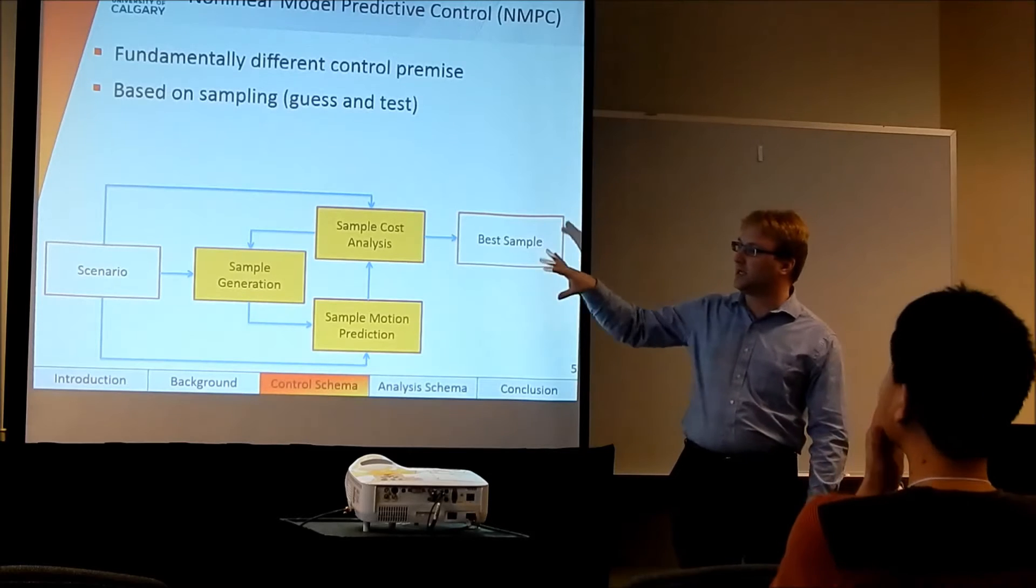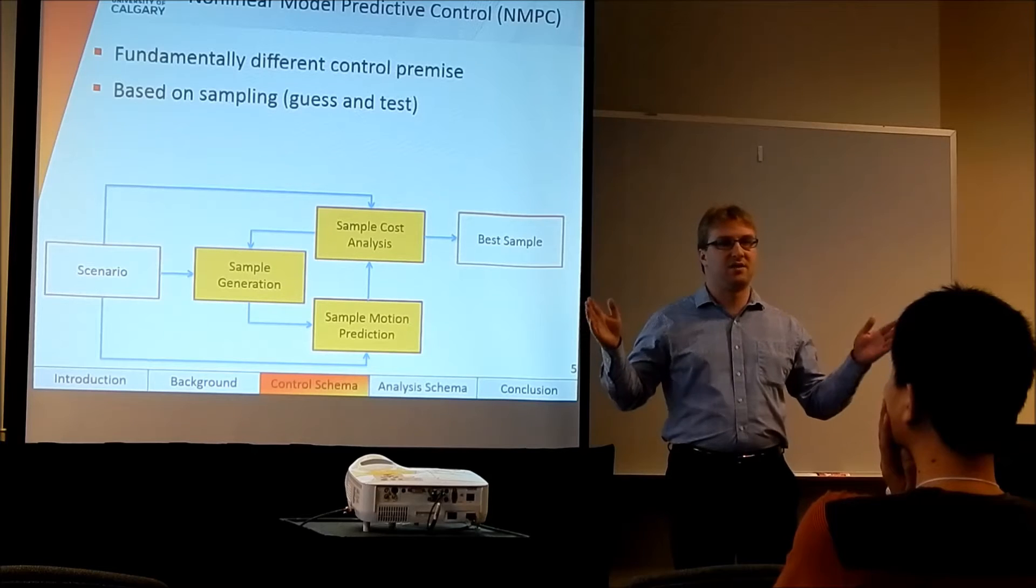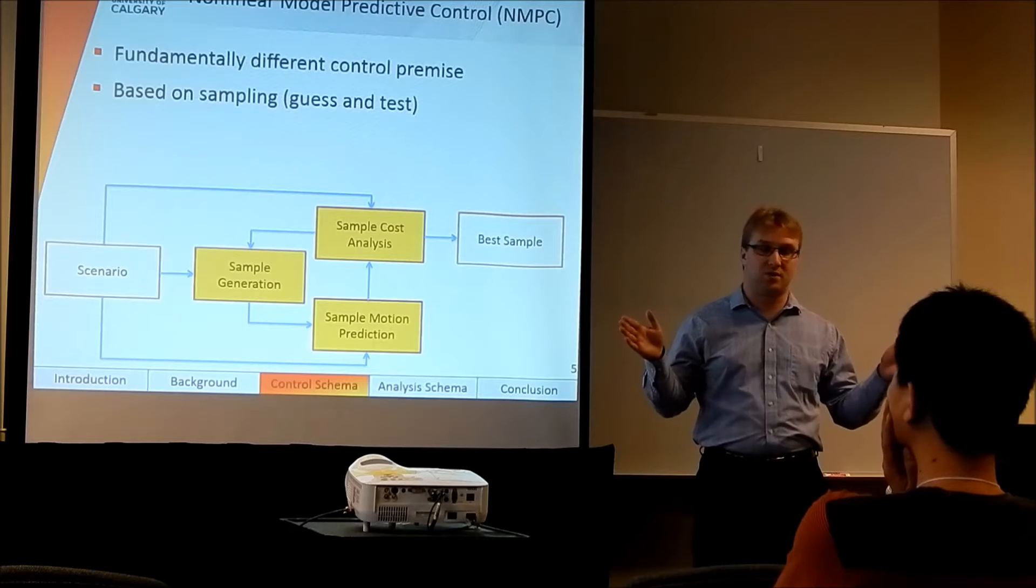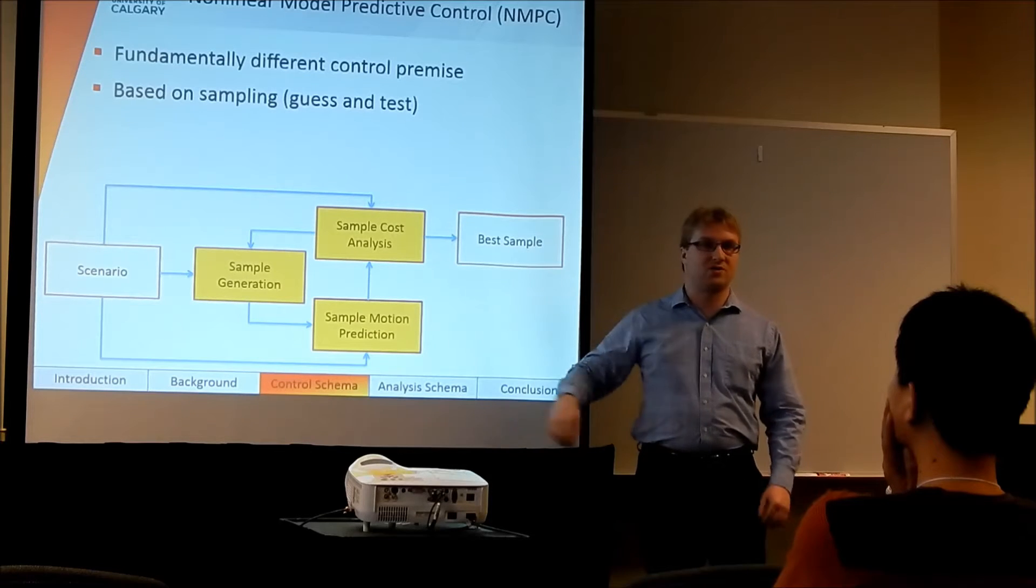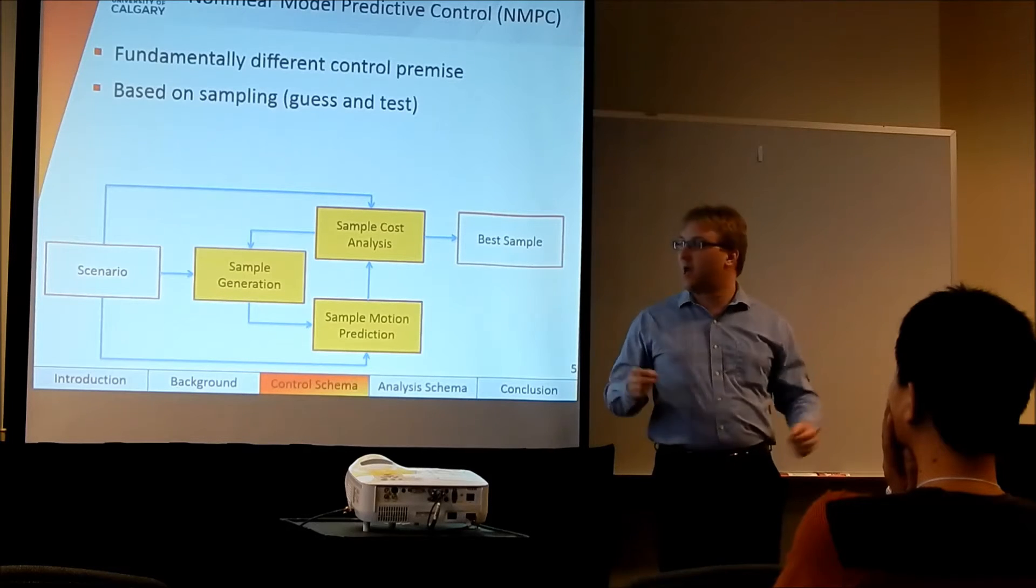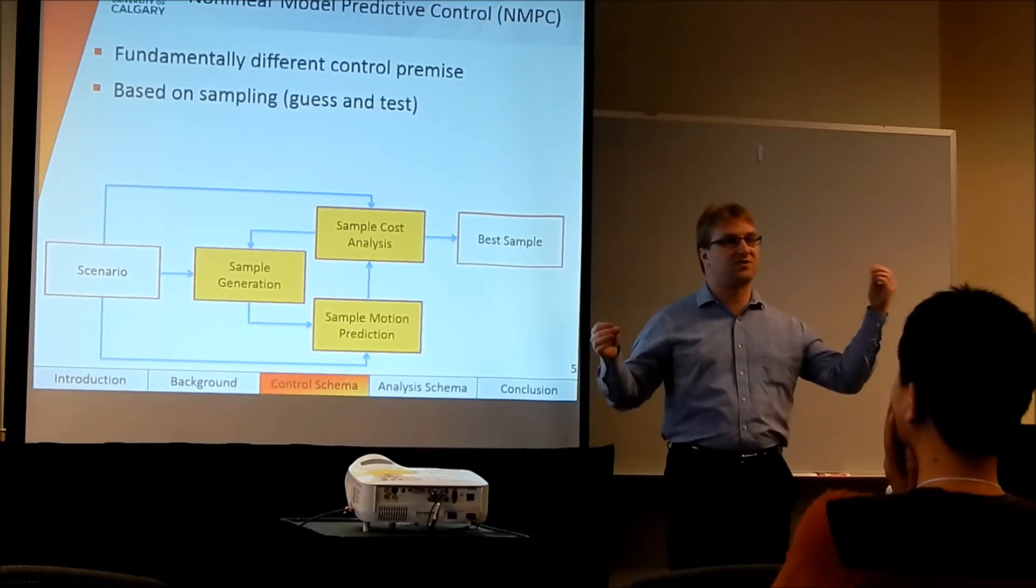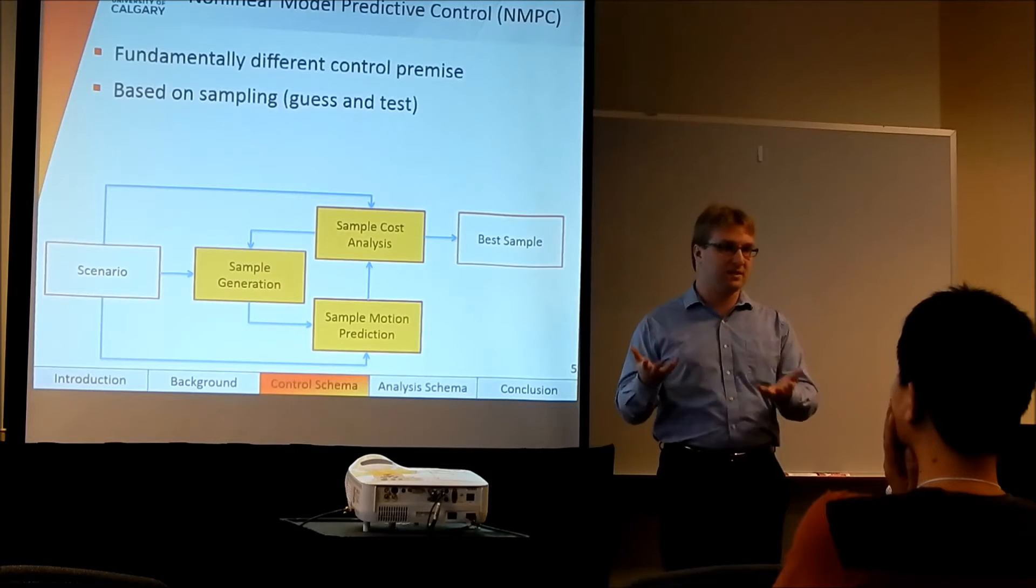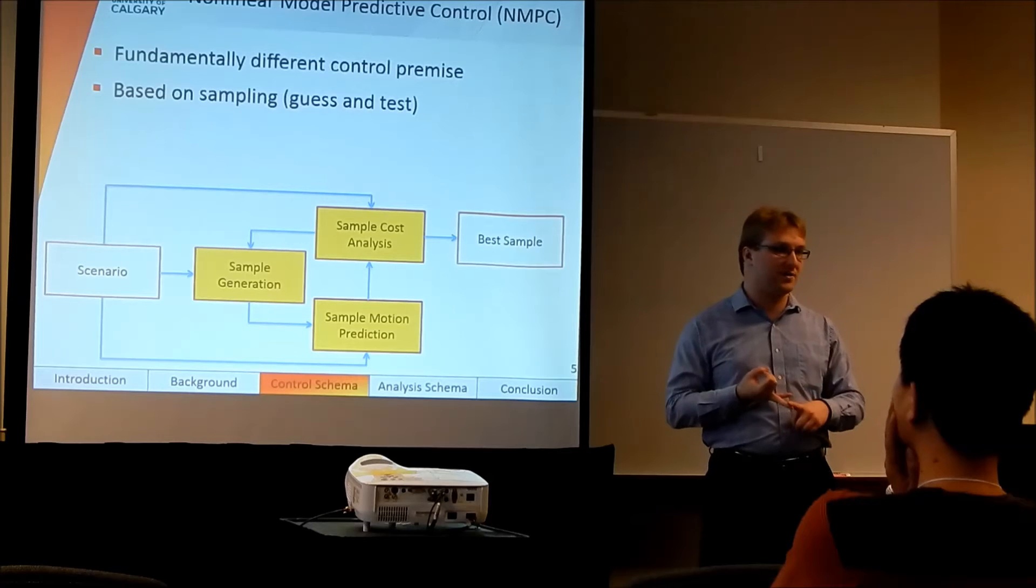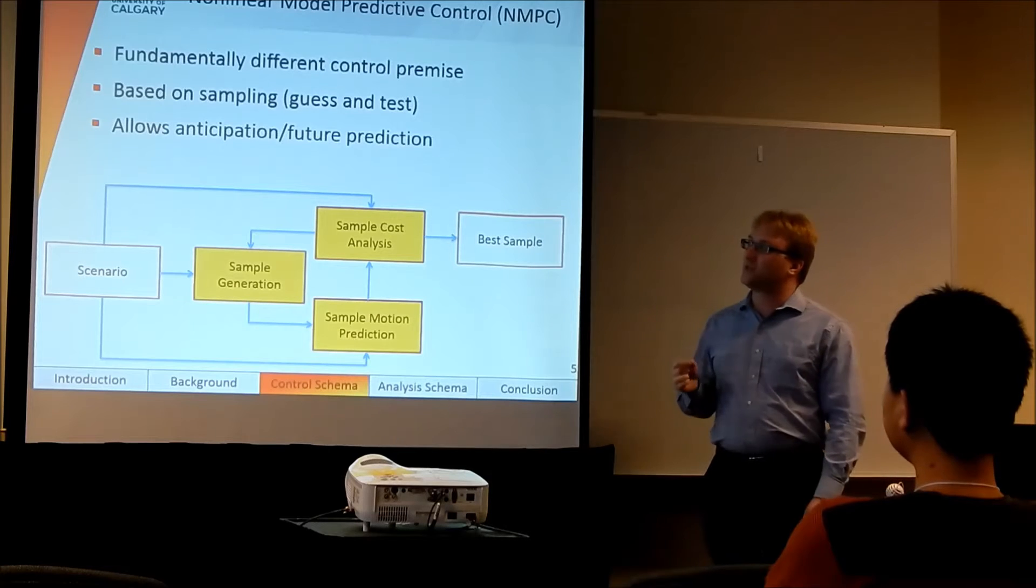So the process is depicted here, where we start off with generating a sample. So let's say that's sample A and sample B. These are two different things that I could do with my control system, and I have to figure out which one I should do. We then predict where the vehicle will go as a result of each of these samples. So sample A takes me here, sample B takes me there. And then we do a cost analysis to choose the best sample. Sample A has a cost of five, sample B has a cost of seven. So I would choose sample A because it costs less. Cost may be things like fuel usage. It may also be things like incurred risk. If I fly close to a building, I'm more likely to crash.